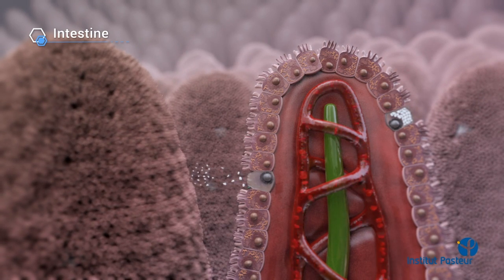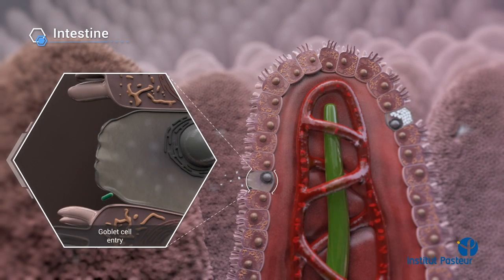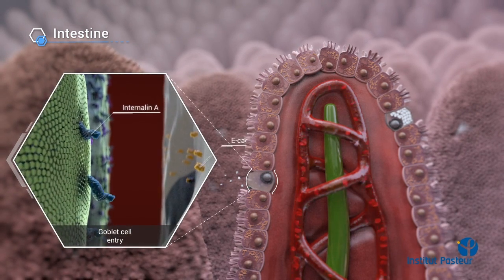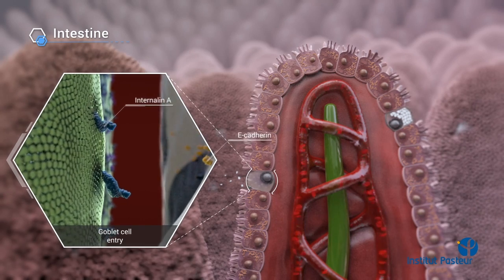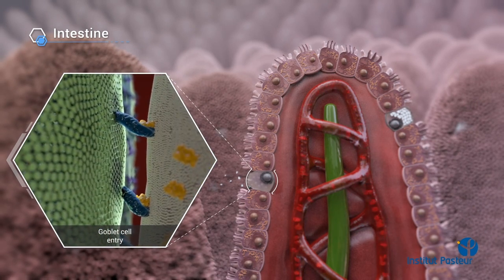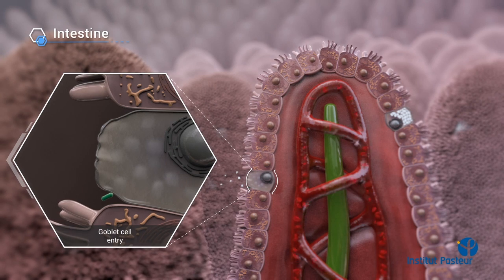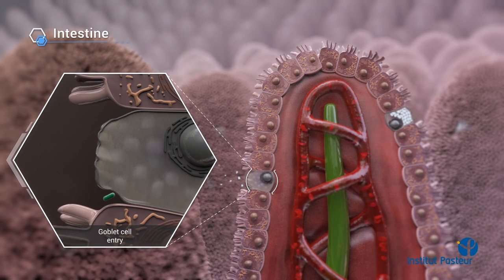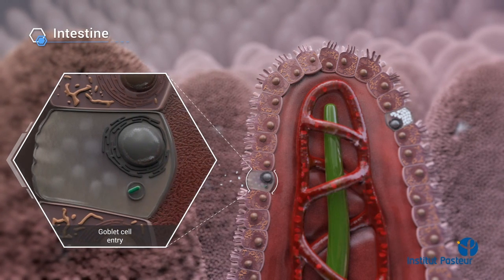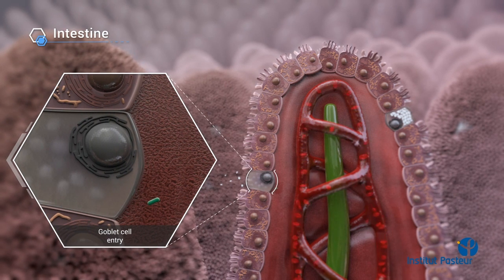Crossing of the intestinal barrier starts by the interaction of the bacterial protein internalin with E-cadherin, a human-specific receptor accessible in the lateral region of these cells. After binding to the cell, the bacterium is internalised, rapidly transcytosed, and released in the lamina propria and into the bloodstream.